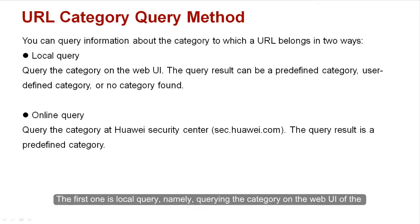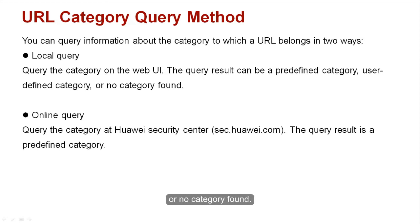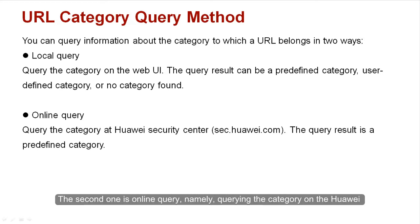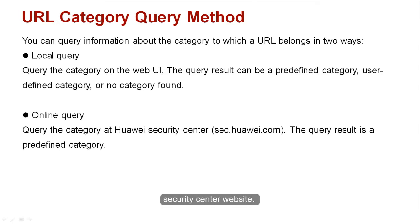The first one is local query, namely querying the category on the web UI of the firewall. The query result can be a predefined category, user-defined category, or no category found. The second one is online query, namely querying the category on the Huawei Security Center website. The query result is a predefined category.